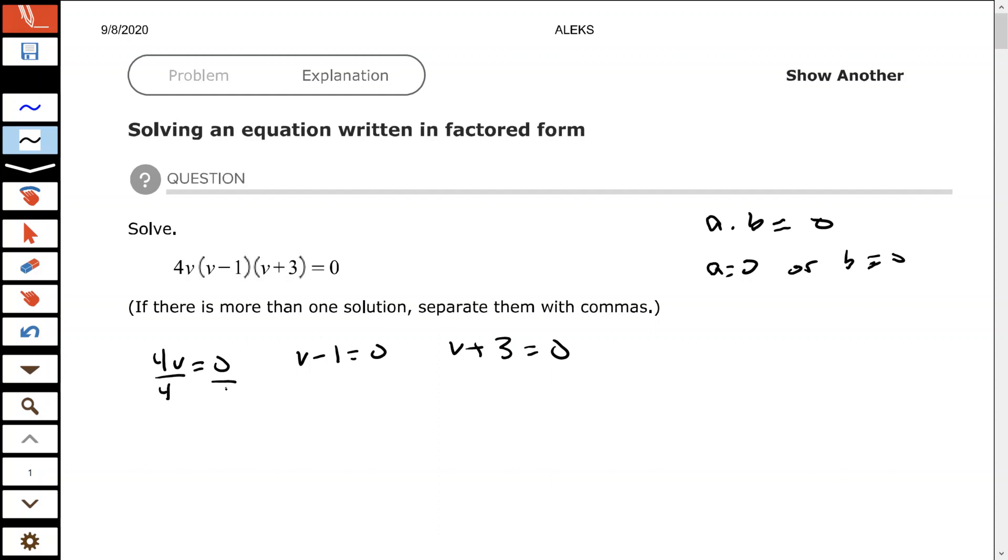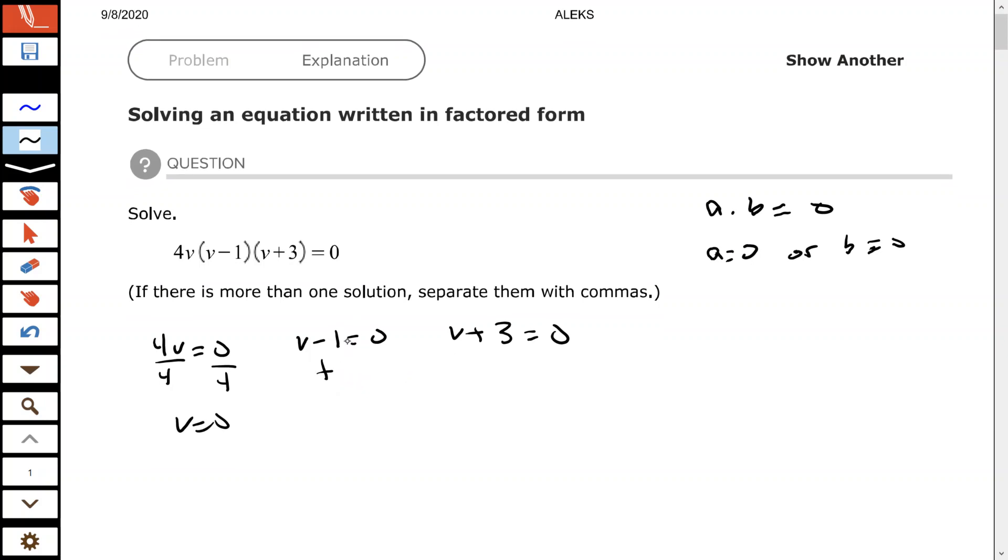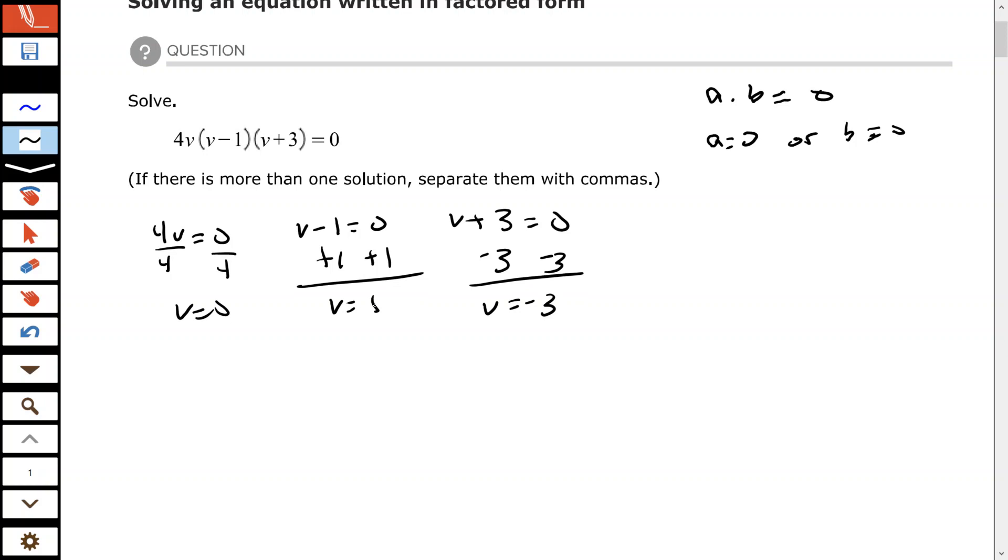To solve this equation we need to divide by 4. To solve v minus 1 equals zero we need to add 1 to each side. So we have the answers 0, 1, or negative 3. It says if there is more than one solution we can separate them with commas for Alex. So we would say 0 or 1 or negative 3. That means if we replace v with either of those numbers then the equation would be true.